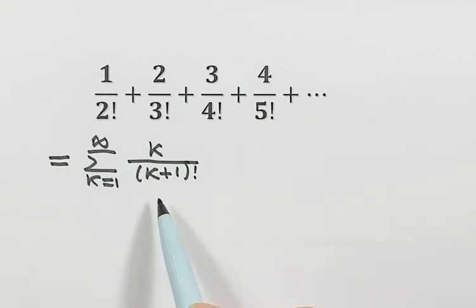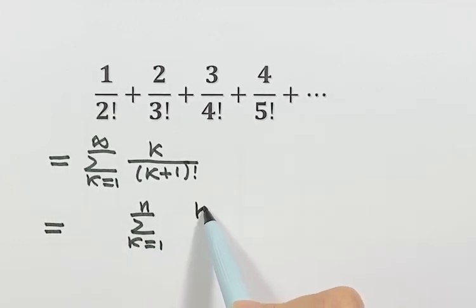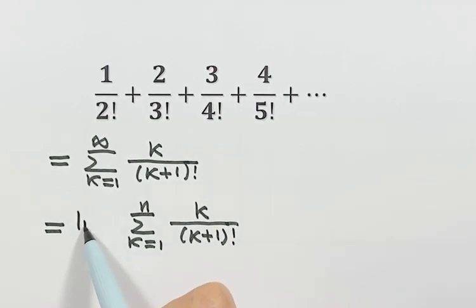So then for this infinite sum, we can write as here, the sum k from 1 to n. Then here, we use a limit, and n goes to infinity.